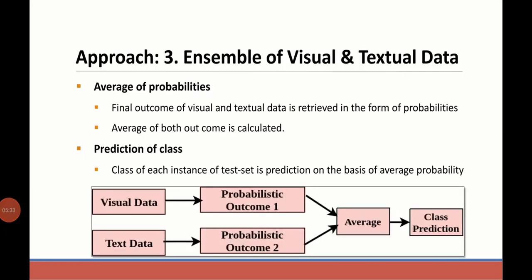For the fusion of visual and textual data, we combined the outputs received from visual and textual data in the form of probabilities and calculated the average of both outcomes to achieve the final prediction.